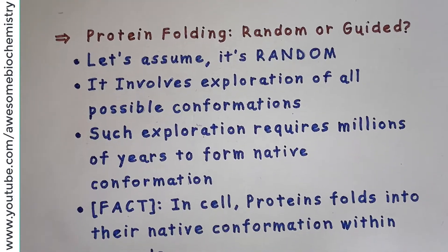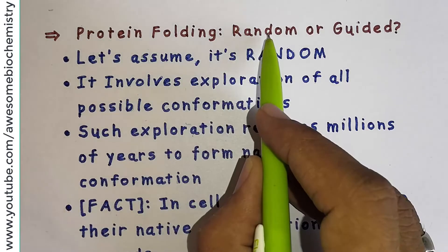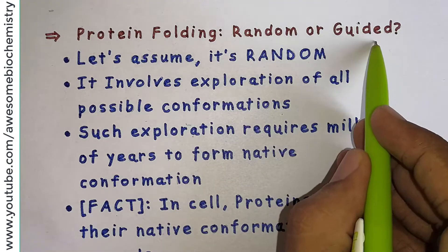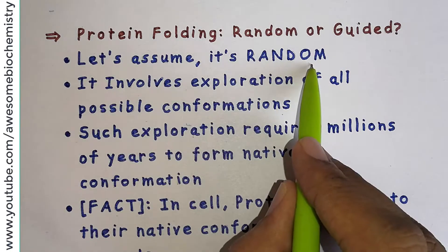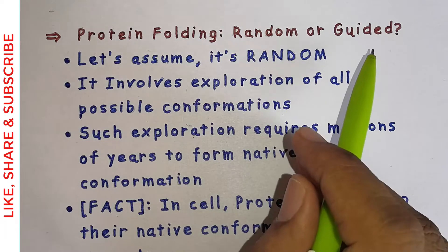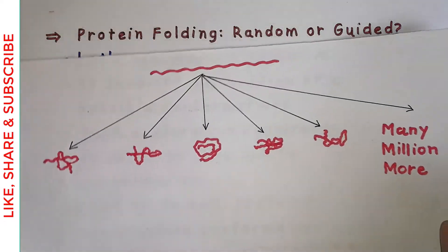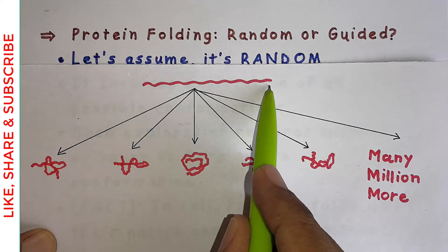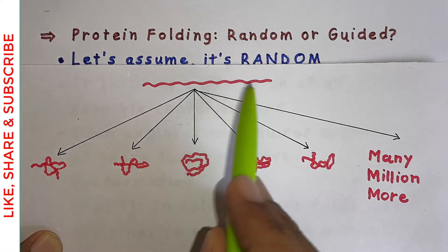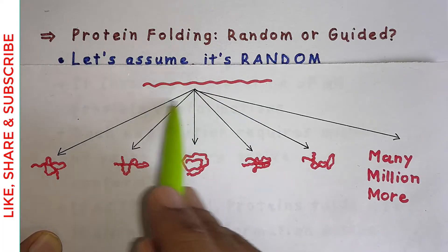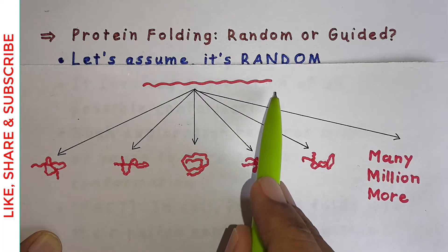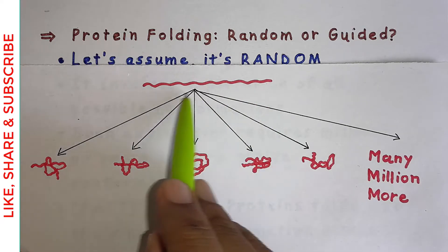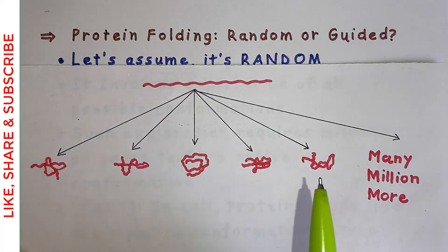Let's start with the first point: is protein folding a random process or a guided process? To understand this, let's assume it is a random process. Consider this diagram showing a short polypeptide chain having 50 amino acids. It is estimated that such a short polypeptide chain can fold into millions of different conformations.